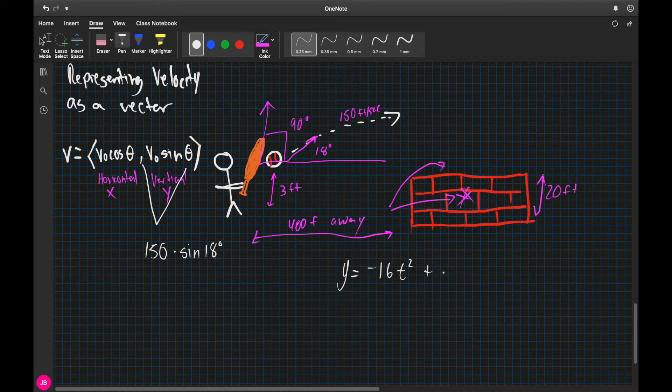And this is going to be my V naught. So, 150 times the sine of 18, and remember that it's very important that we know that this is in degrees, times t.